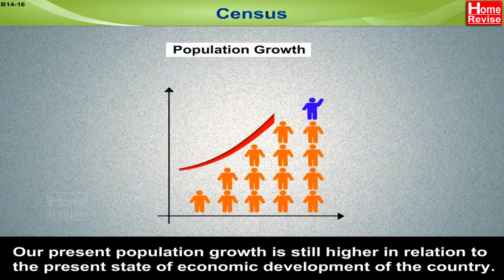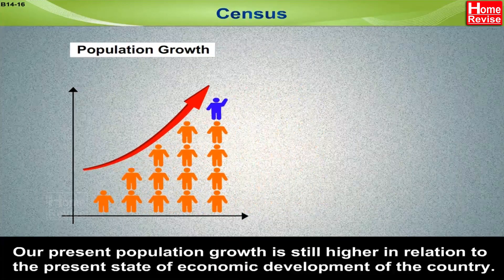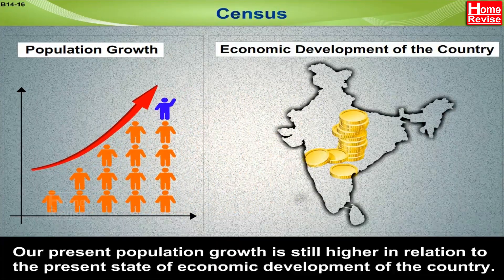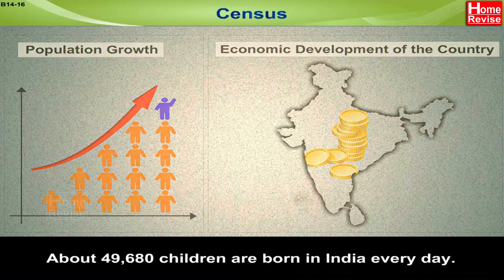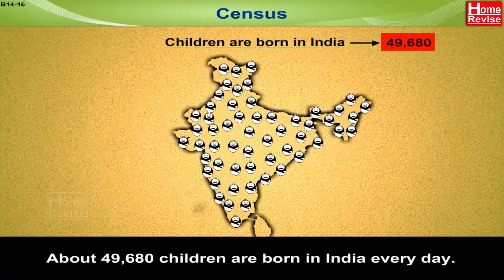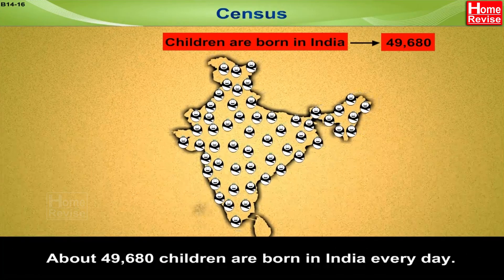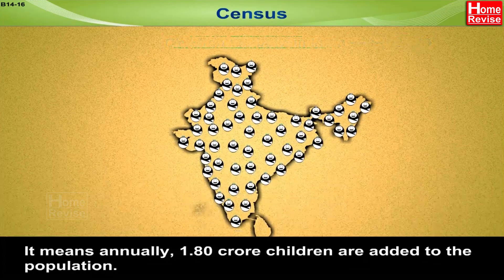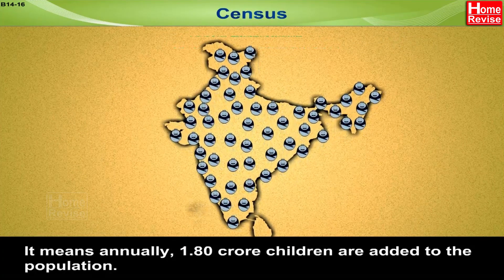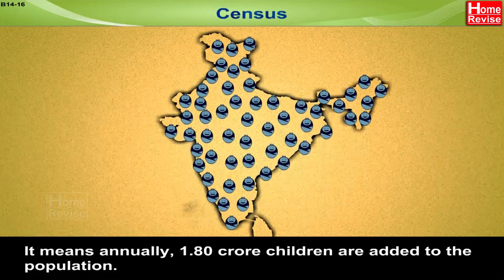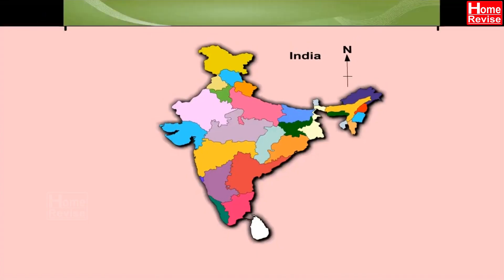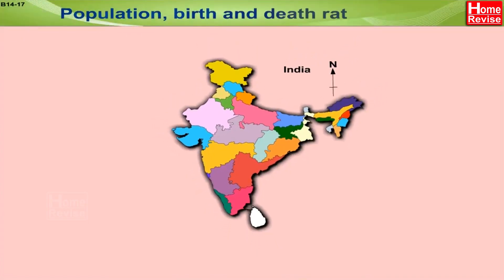Our present population growth is still higher in relation to the current state of economic development of the country. About 49,680 children are born in India every day, meaning annually 1.80 crore children are added to the population.